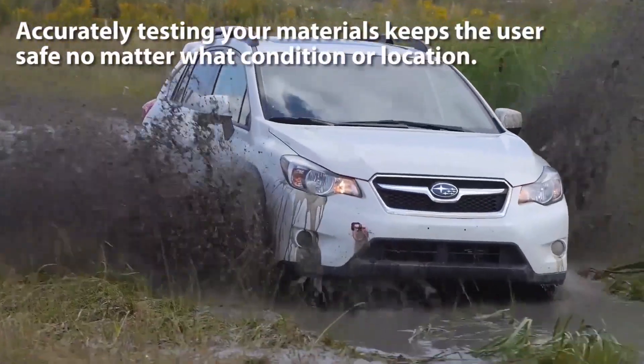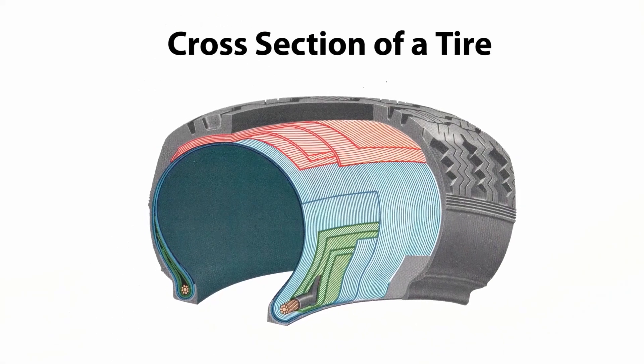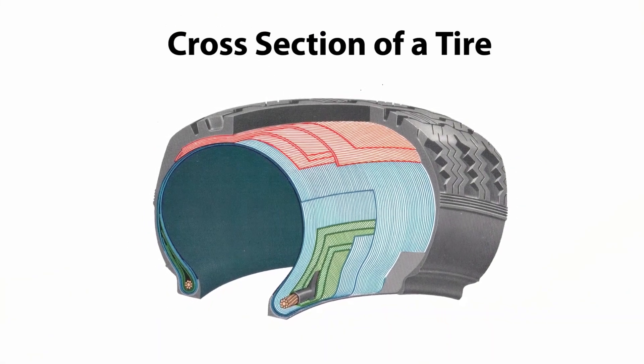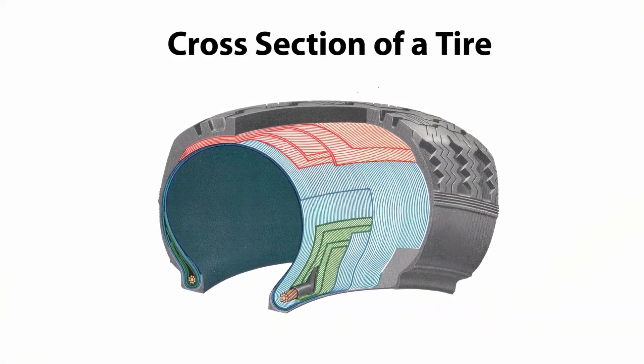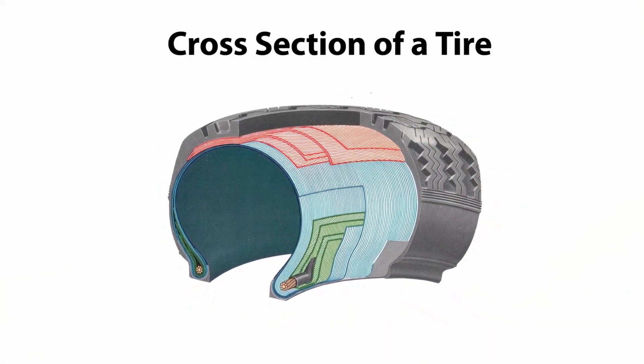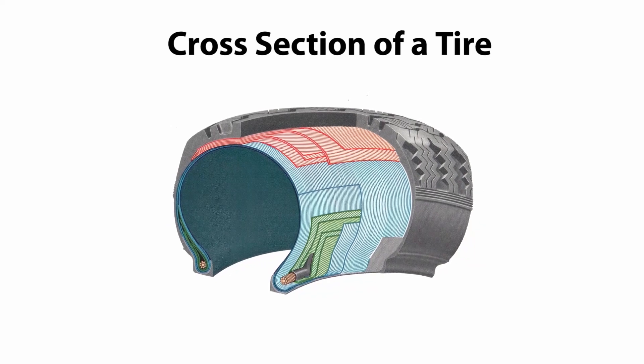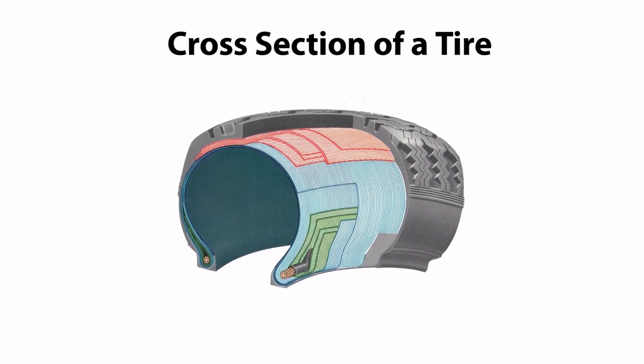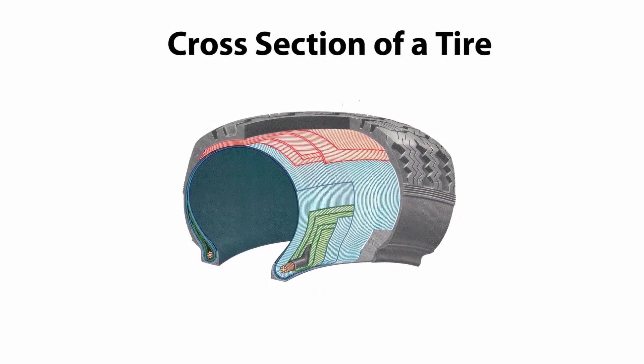Making the best tire requires a full understanding of how each different composite layer affects the final product. Dynamic mechanical analysis, or DMA, tests on a cross section of a tire allow us to quantify the viscoelastic properties of each tire layer.